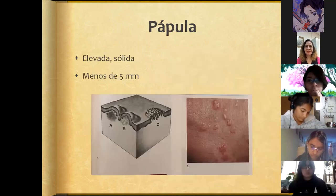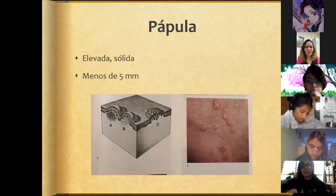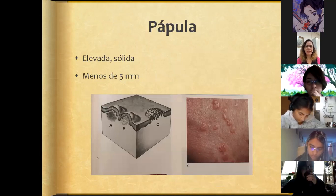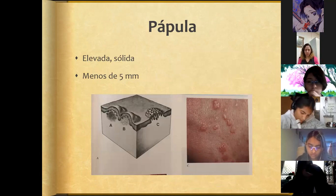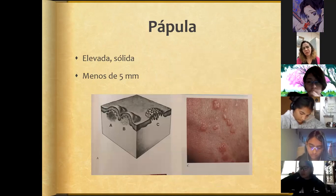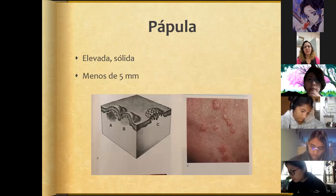Papules are elevated, solid lesions. A papule is generally described as something measuring less than 5 millimeters. In the diagram we can see a clinical and histological example: it involves not only the epidermis but also the dermis, which is why it creates a bump. If it measures more than 5 millimeters, we can speak of neoformations or nodules.